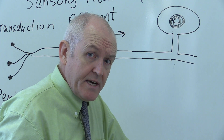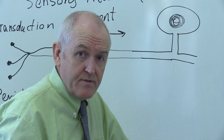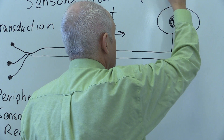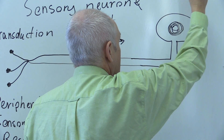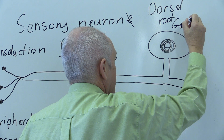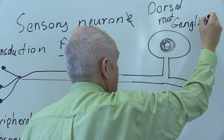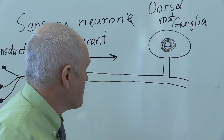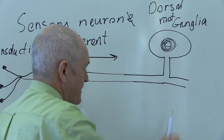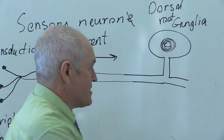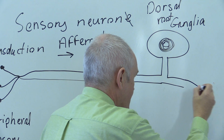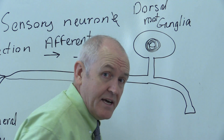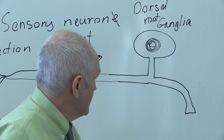We get lots of cell bodies together because there are thousands of individual sensory neurons, and they all clump together in an area called the dorsal root ganglia. A ganglion is a collection of cell bodies near the spinal cord. Because this is near the spinal cord, the next step is for the impulse to go into the spinal cord, where the sensory neuron terminates.